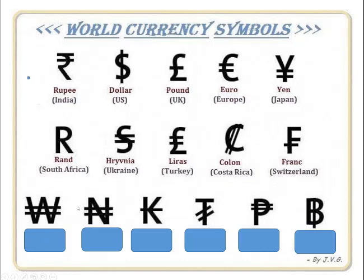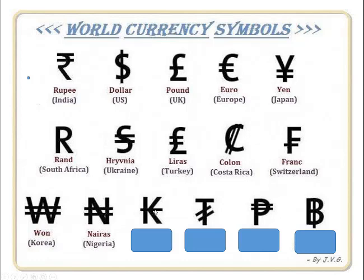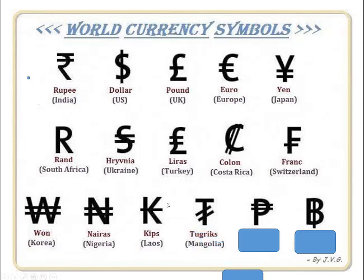Maybe some of you know the next one — it looks a bit like the yen. It's the Korean won. Next one is hard — that one is the naira, the Nigerian money. What about this one with the K through the middle? That's the kip from Laos — Laos is near Vietnam, Cambodia, and just south of China. What about the next one? That's the tögrög — Mongolia's money.